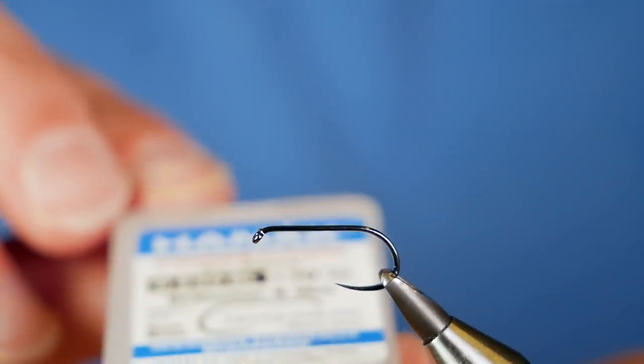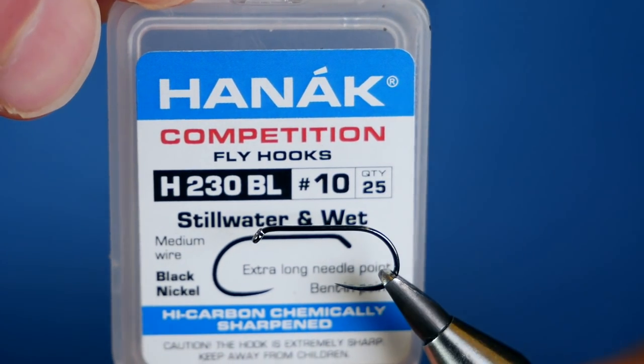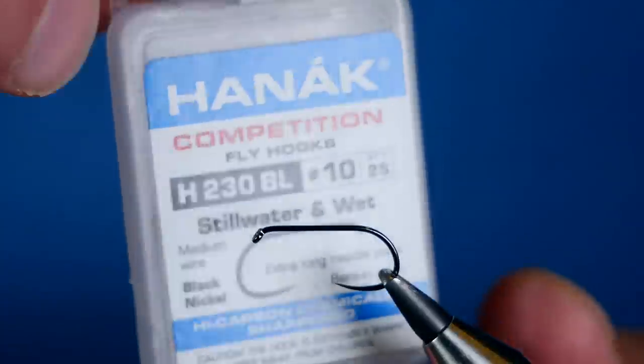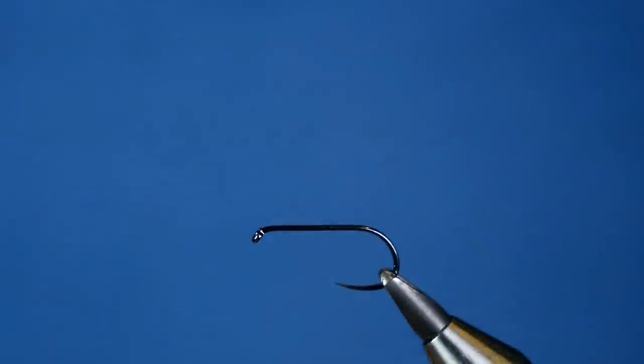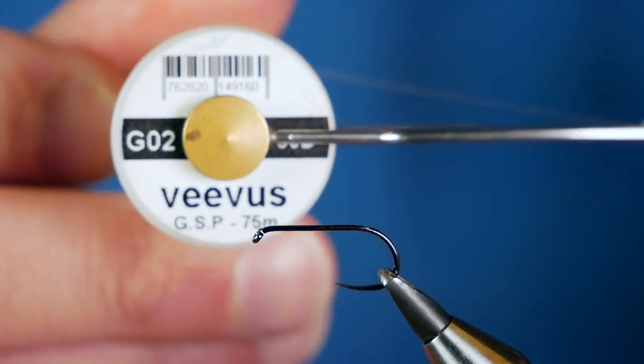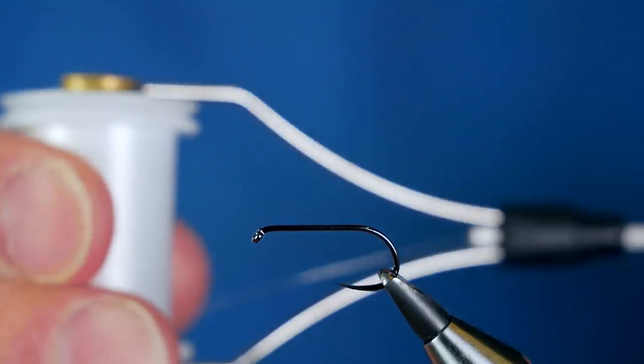The hook in the vise is the Hanak H230 barbless hook. This one's at size 10, and as you can see it's on a medium wire in black nickel. The thread I'm going to be using today is the Vivas GSP at 30 denier.